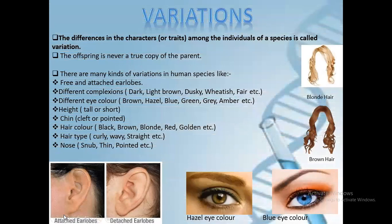What are variations? The difference in the characters among the individuals of a species is known as variation. The offspring is never a true copy of the parents. There are many kinds of variations in human species like free and attached earlobe, different complexions, different types of eye color, height, chin, hair color, etc.